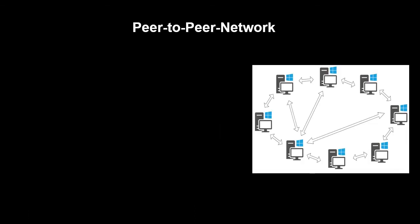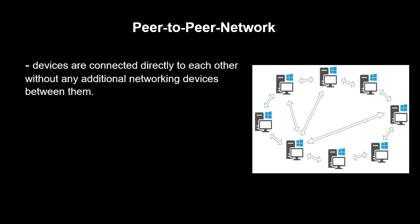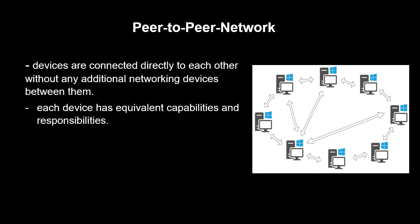We will discuss first the Peer-to-Peer Network. In a Peer-to-Peer Network, devices are connected directly to each other without any additional networking devices between them. As you can see, these are all personal computers. Each device has equivalent capabilities and responsibilities, sharing equal resources.